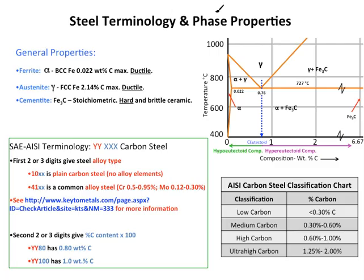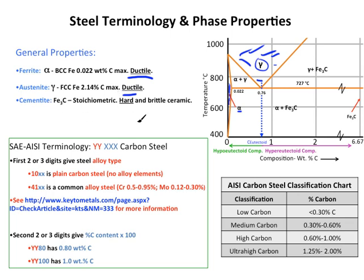Now that we know the different regions of the steel portion of the iron-iron carbide phase diagram, let's look at properties of the single-phase regions. Ferrite (alpha) is ductile. Austenite (gamma) is also ductile. Cementite (carbide) is stoichiometric and is hard and brittle — a ceramic — found along its fixed composition line.